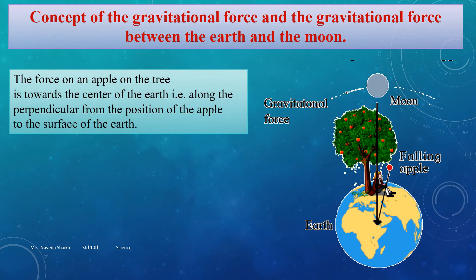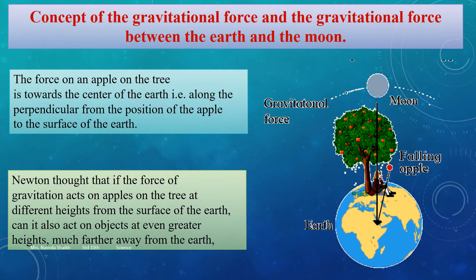Newton thought that the force on an apple is towards the center of the earth, along the perpendicular from the apple's position to the surface. He also noted that apples are at different heights on a tree — some above, some below — yet all fall in the same vertical direction. So at different heights the gravitational force was acting, and he concluded that objects much further away from the earth must also be attracted towards it.